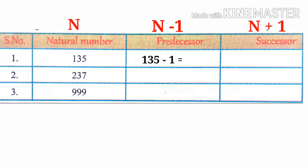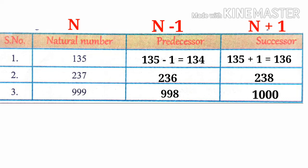So suppose for 135, 135 minus 1, that is 134 is predecessor, and 135 plus 1, that is 136 is successor. For 237, 237 minus 1, that is 236 is predecessor, and 237 plus 1, that is 238 is successor. For 999, 998 is the predecessor and 1000 is the successor.